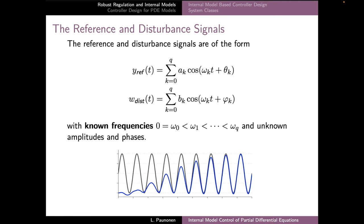In the output regulation problem, we assume that our reference and disturbance signals consist of a finite number of individual frequency components with possibly unknown amplitudes and phases, but we assume that we know the frequencies of the reference and disturbance signals — so we assume that these omega_k are known values. If these are not known, they can often be approximated or estimated from various signals, but in the context of internal model control it's useful to assume these frequencies to be known.